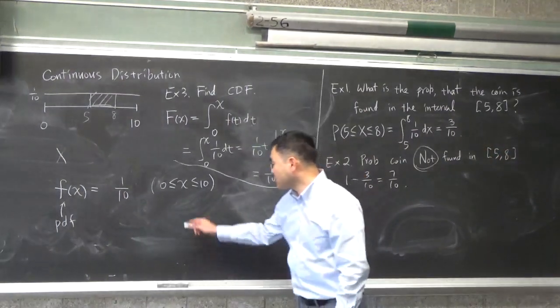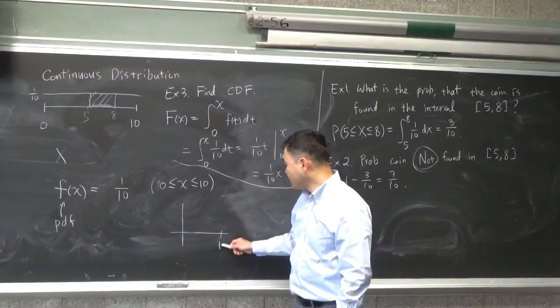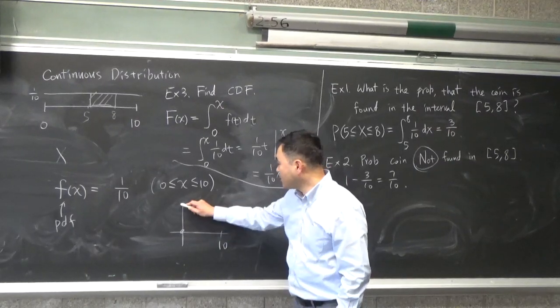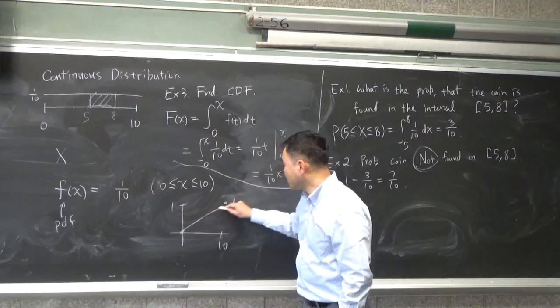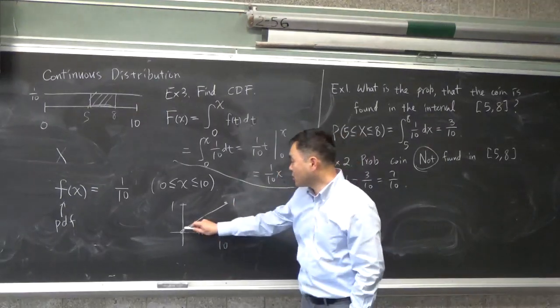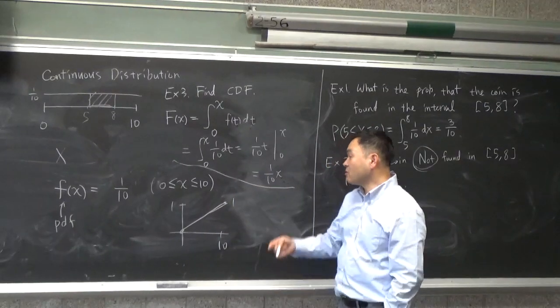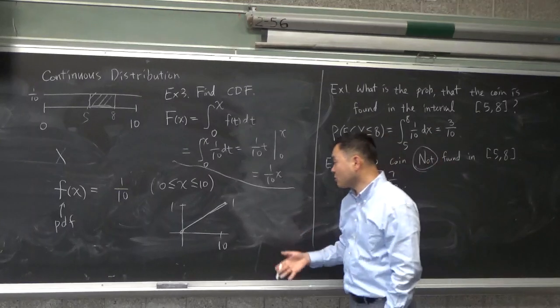It kind of makes sense because if you draw the graph of the CDF, when x is 0, it starts from 0, and then when x is 10, it reaches 1. It's a straight line because the integral of a constant function will give you a linear function. If you have a linear function, if you integrate, you're going to get a quadratic and so on.